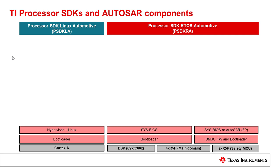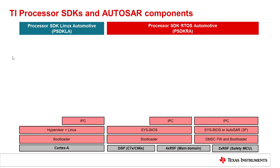Next, we have the OS itself. This consists of the Linux kernel and optionally a hypervisor on A72. On the DSPs and R5Fs, we have the TI RTOS called SysBIOS. Just above the OS is the Interprocessor Communication Library, also referred to as IPC. IPC allows the various software applications on different CPUs to synchronize and exchange messages among each other. This message exchange is done using common shared memory and interrupts to help reduce message passing overheads and latency.